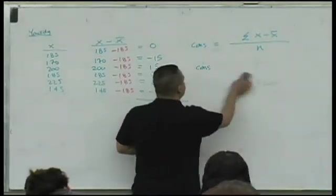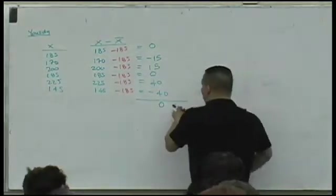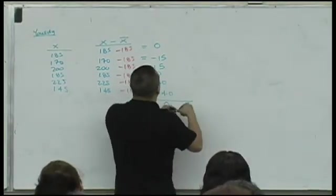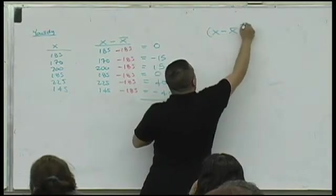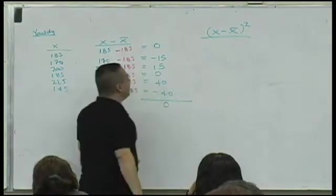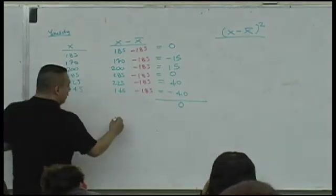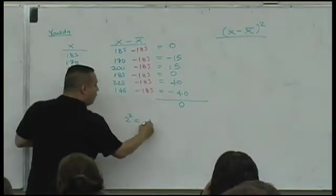Isn't it true that if I square a number, if I square a number, like, oh, I don't know, take two squared, isn't that four? And then I take the square root of four, isn't that two?